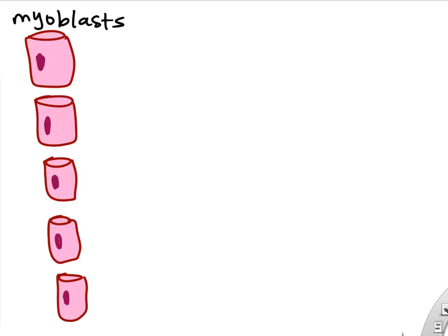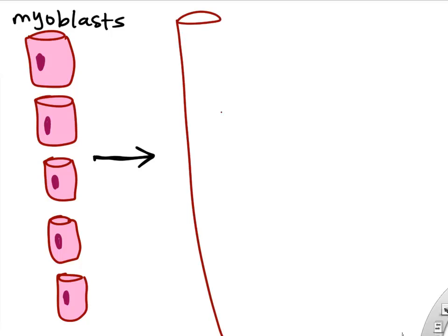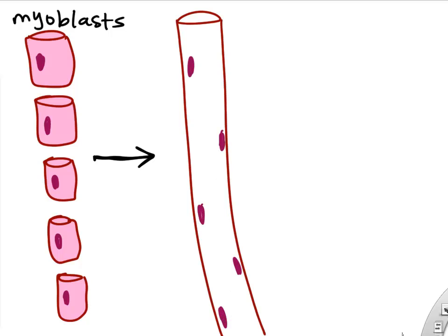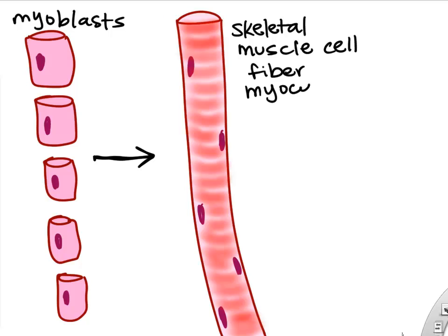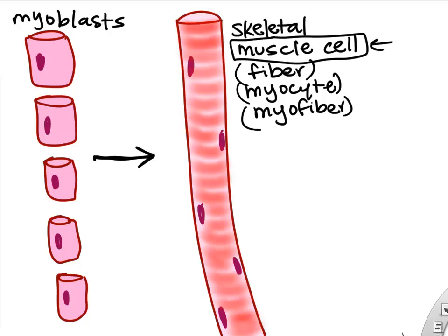Early in development, skeletal myocytes are created by the fusion of many thousands of myoblasts. These myoblasts fuse to create one very large cell, which is why skeletal muscle cells appear multinucleated — they have multiple nuclei because they came from many founding cells.